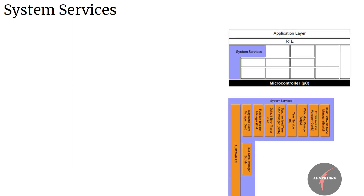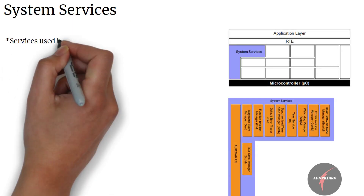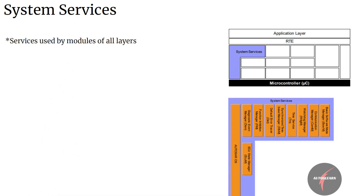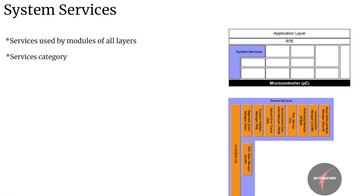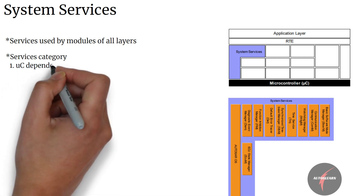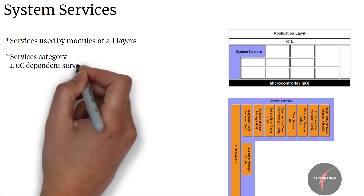Now let's look into the last service of the service layer: system services. System services are a group of modules and functions which can be used by modules of all layers. For example, real-time operating system, which includes timer services and error manager, etc.